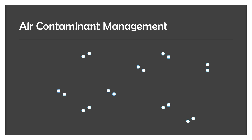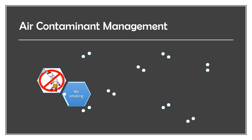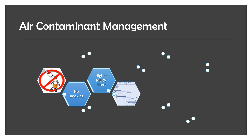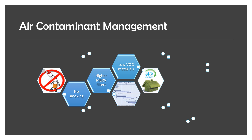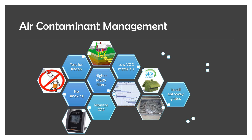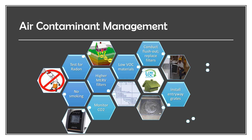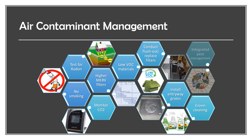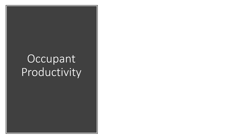To summarize, some of the strategies you can use to manage air contaminants include no smoking, higher MERV filters, using low VOC materials, testing for radon, installing entryway grates, monitoring CO2, conducting a flush out, replacing filters, using green cleaning products, and using integrated pest management. And strategies to increase occupant productivity include increased ventilation control, increased temperature control, increased lighting control, increased daylighting, and other strategies that research shows can increase productivity.